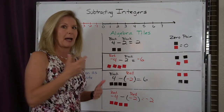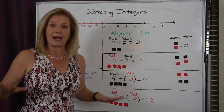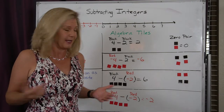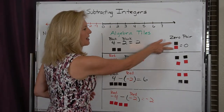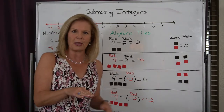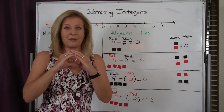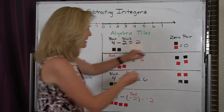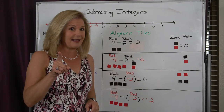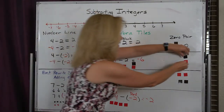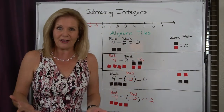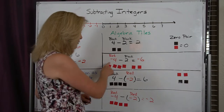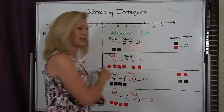If I have negative 4 minus a positive 2, I'm going to lay down my negative 4 — my reds. From that, I have to take away two blacks, but I don't have two blacks to take away. So the only way I can get two blacks is to use the concept of a zero pair: a positive black and a negative red cancel each other out — they equal zero, it's like nothing is there. I need to keep my negative 4, but if I add a zero pair, I still have negative 4 because it equals zero. If I add a second zero pair, I still have negative 4, but now I have two blacks I can take away. Therefore, negative 4 minus 2 is negative 6, because I have six red tiles.